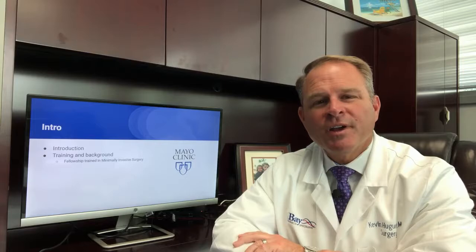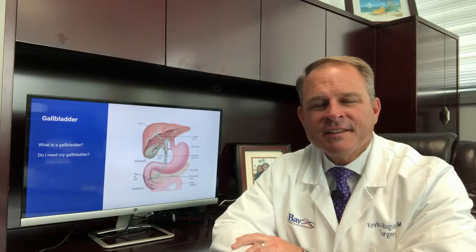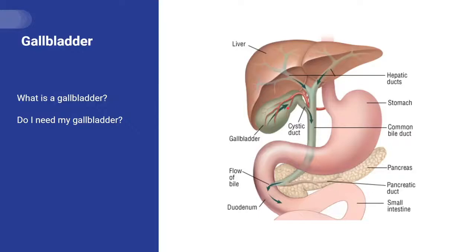The gallbladder is a little sack that sits below your liver that helps you digest fatty foods. Bile is produced in the liver and secreted into the bile ducts, which then goes into the gallbladder as a storage facility. After you eat a meal, usually a large or fatty meal, the gallbladder will squeeze and give you a kick of bile to digest that food.